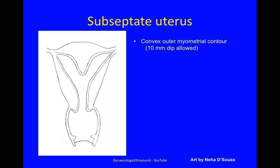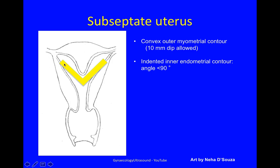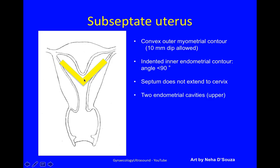A subseptate uterus. Again, a convex outer myometrial contour with a 10mm dip allowed. An indented inner endometrial contour with an angle of less than 90 degrees — you can see this is less than 90. This septum does not extend to the cervix, and there are two upper endometrial cavities and two interstitial portions of the fallopian tube.